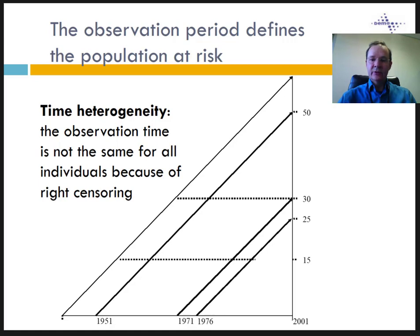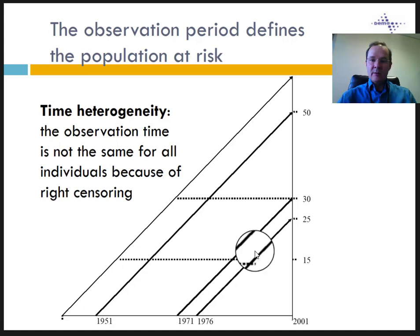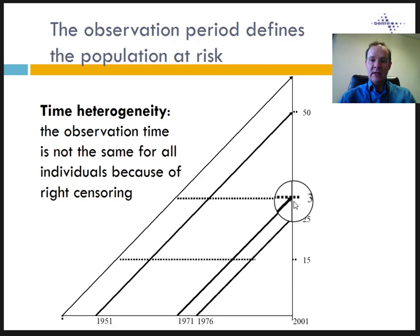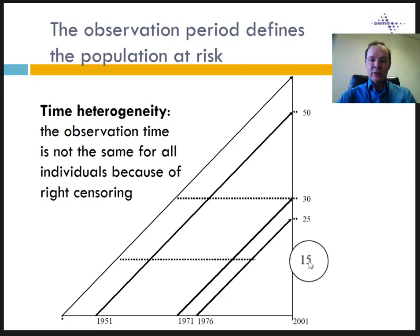The three individuals passed the age of 15, but only two passed the age of 30, as represented by these two horizontal lines at age 30 and at age 50. The sum of all observation periods for all individuals represents the population at risk, that is, the number of person-years at risk.